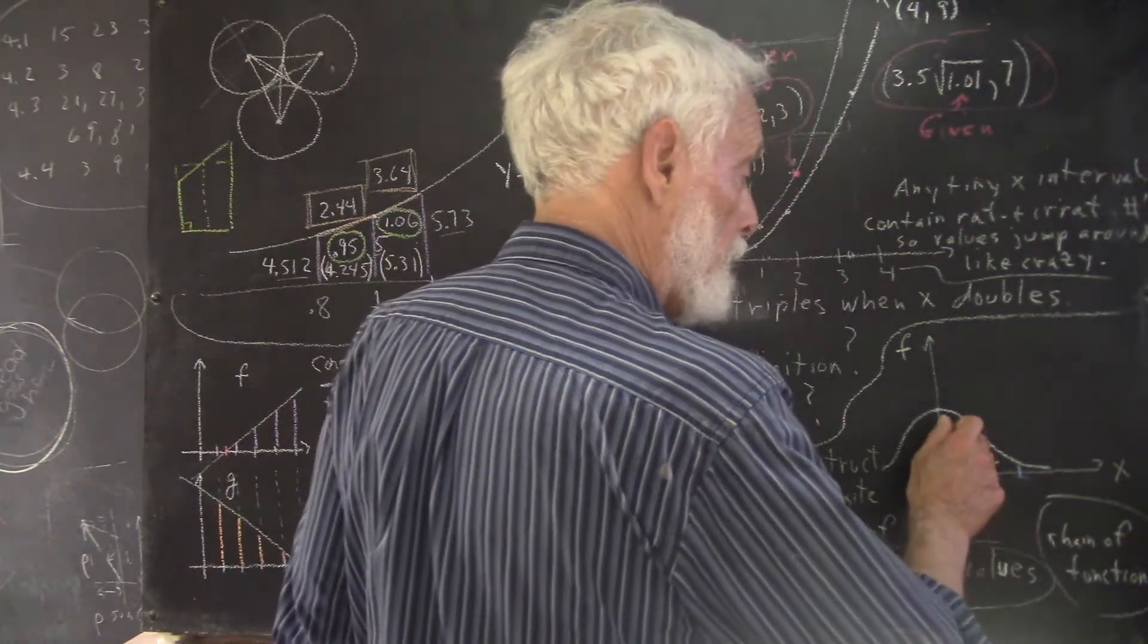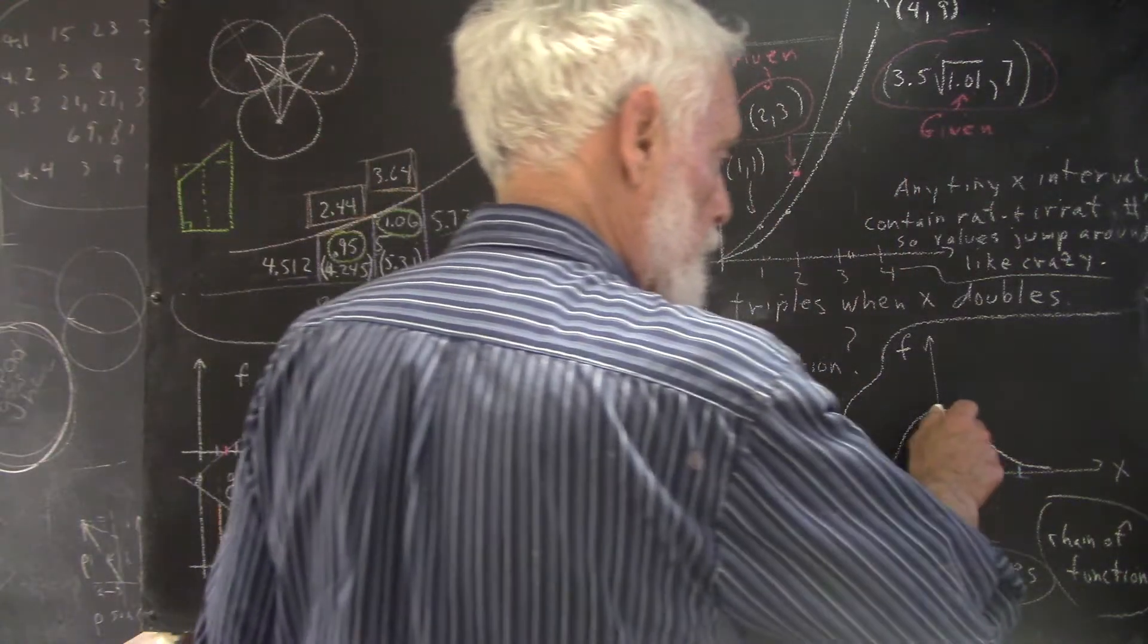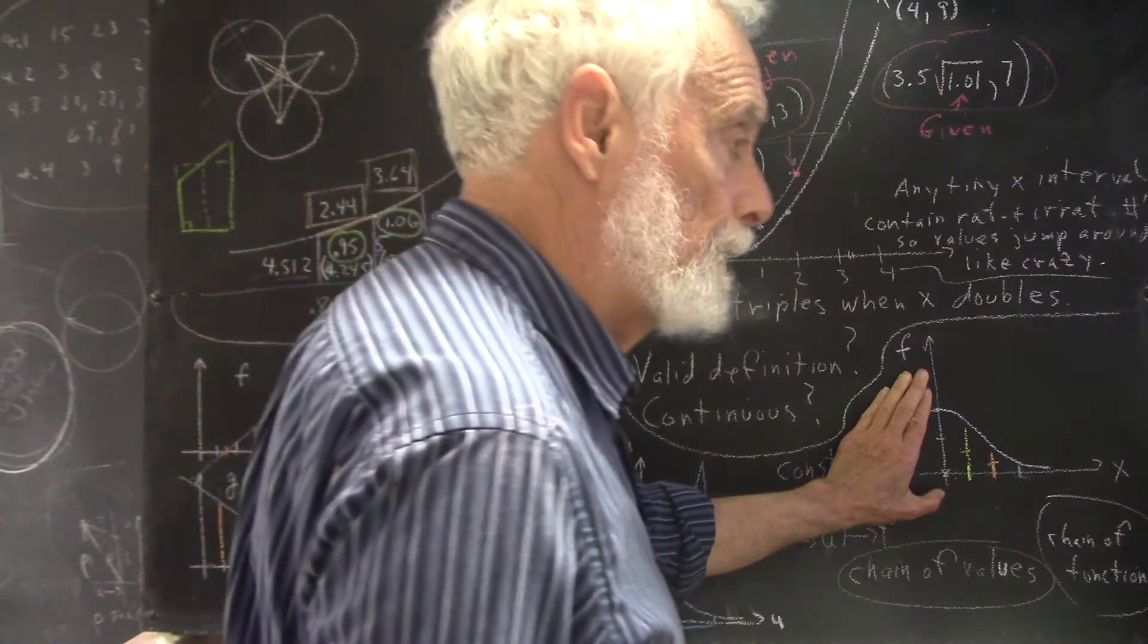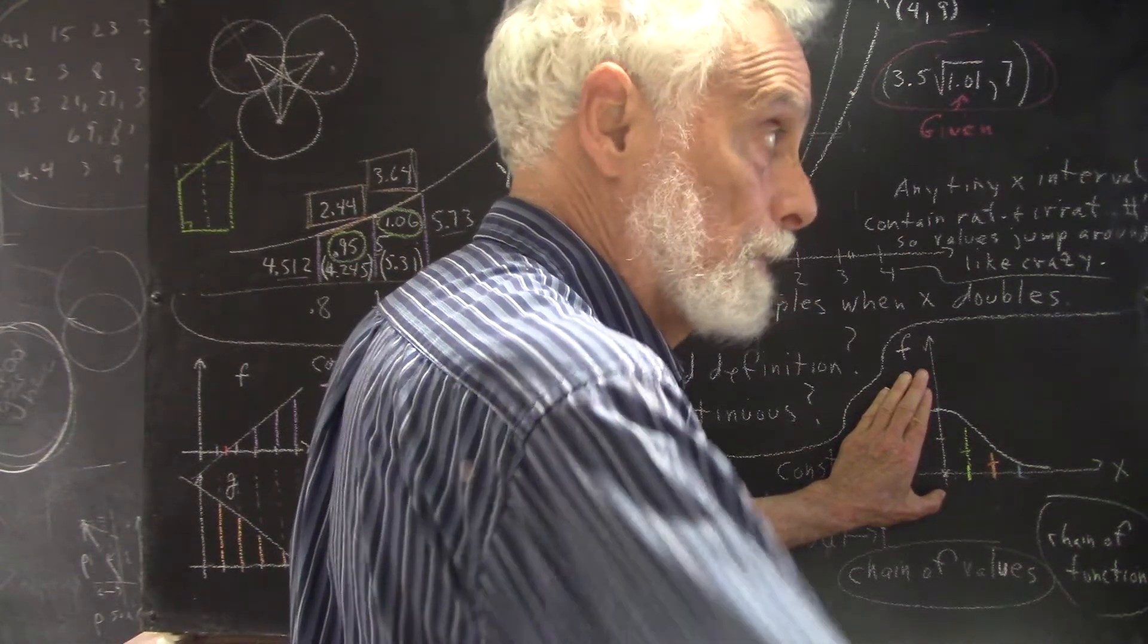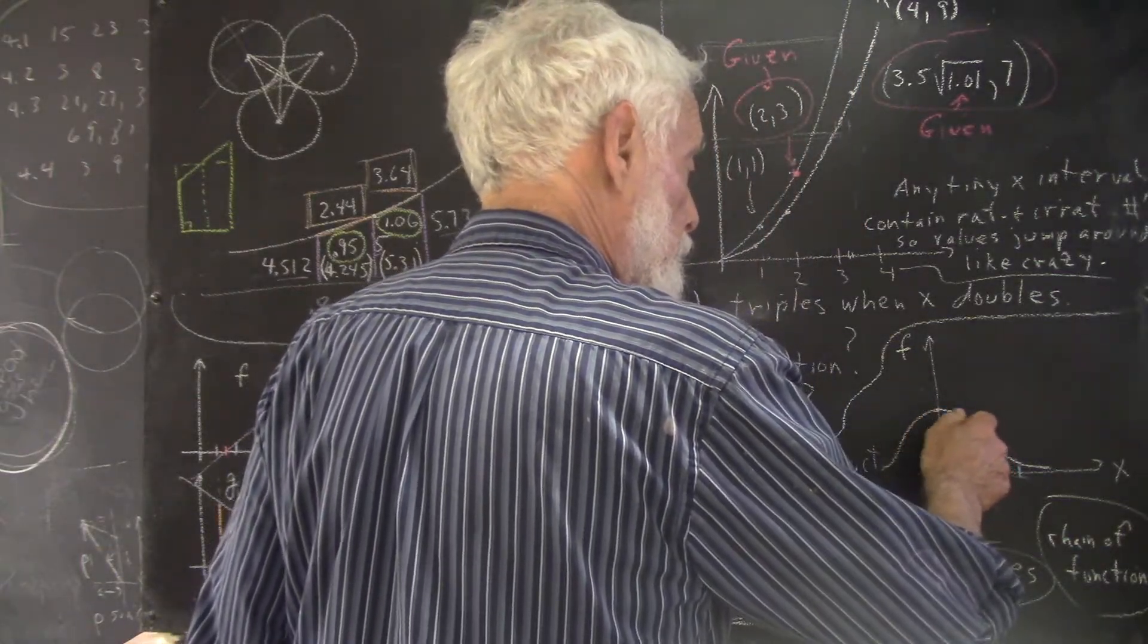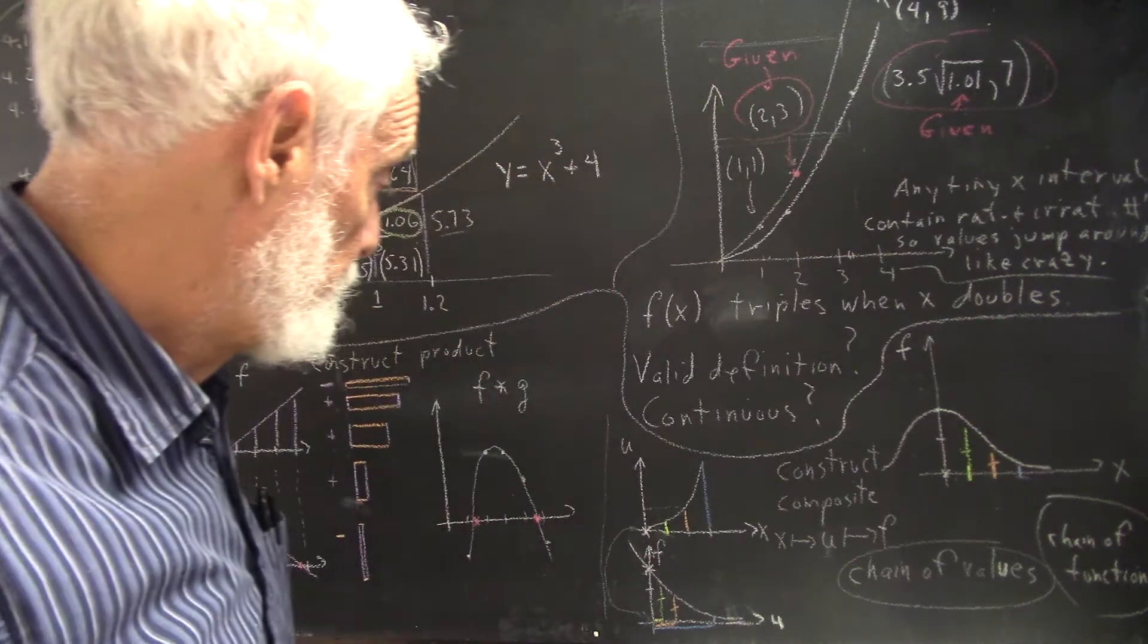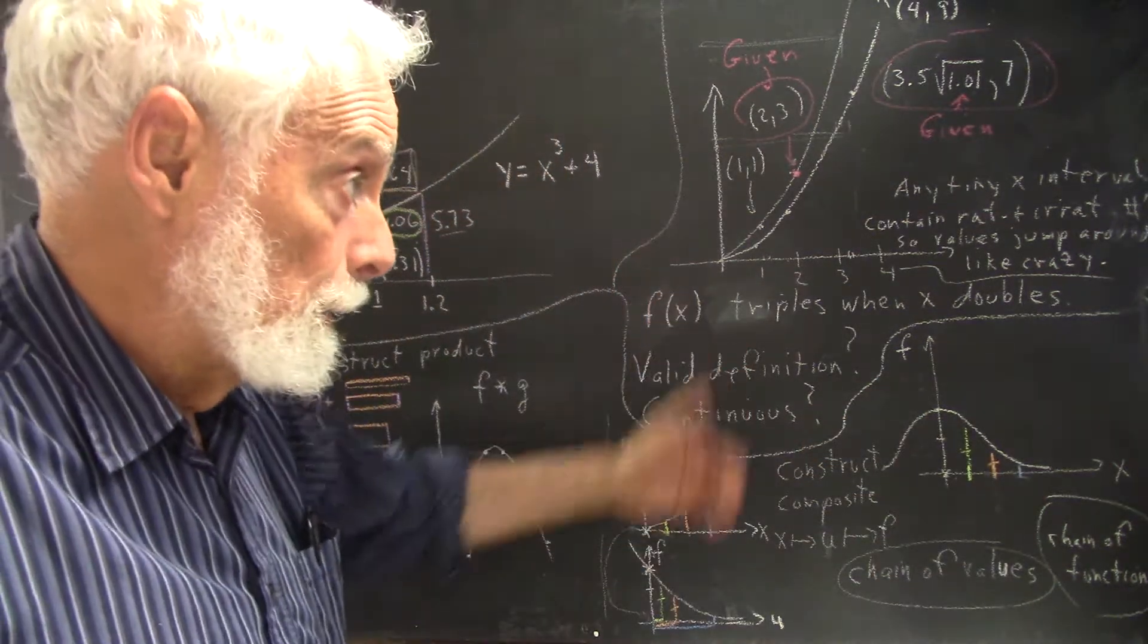So what we do is we sketch the graph through these points, and we get a graph that looks like this. And I didn't have this, and I asked the class, well, what does that look like to you? And somebody responded, well, that looks like the right half of a normal curve. If I reflect through the X-axis, I get the left half of the normal curve. And this is really a construction of a normal curve.